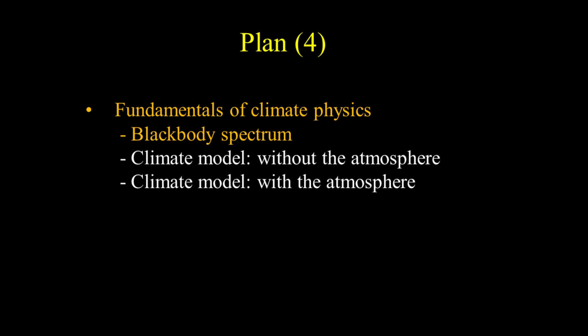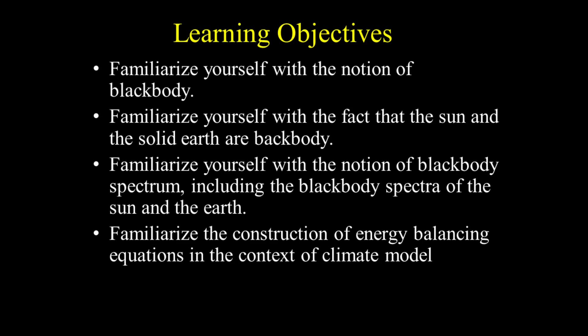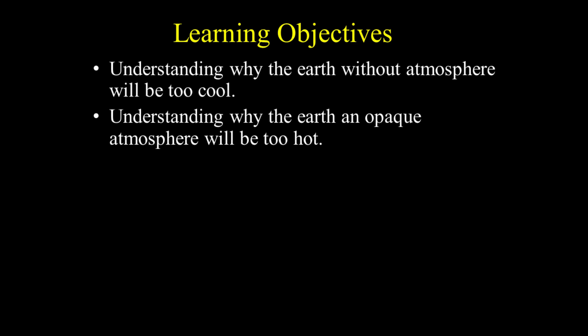Finally, let's talk about climate. Our learning objectives here are to familiarize yourself with the notion of blackbody, and the fact that the Sun and the solid Earth are blackbodies. We'll also cover the blackbody spectrum, including the blackbody spectra of the Sun and the Earth, the construction of energy balance equations in the context of a climate model, why the Earth without atmosphere will be too cool, and why the Earth with an opaque atmosphere will be too hot.